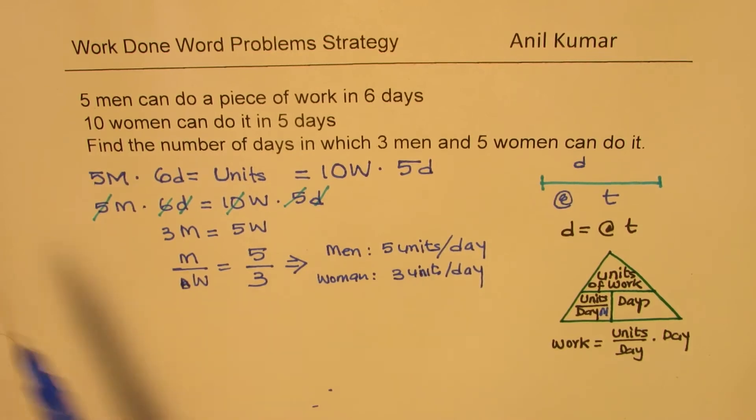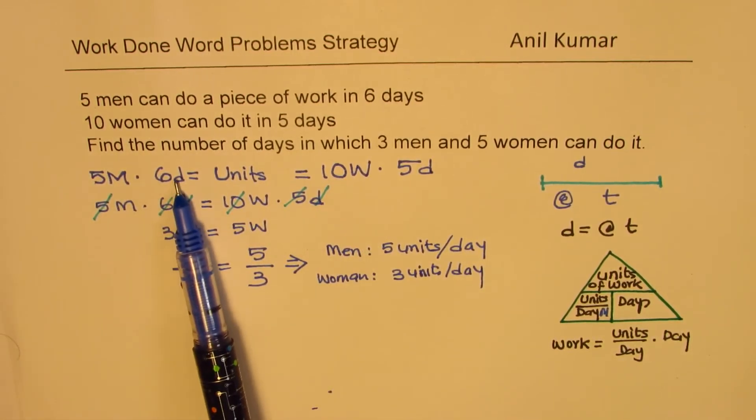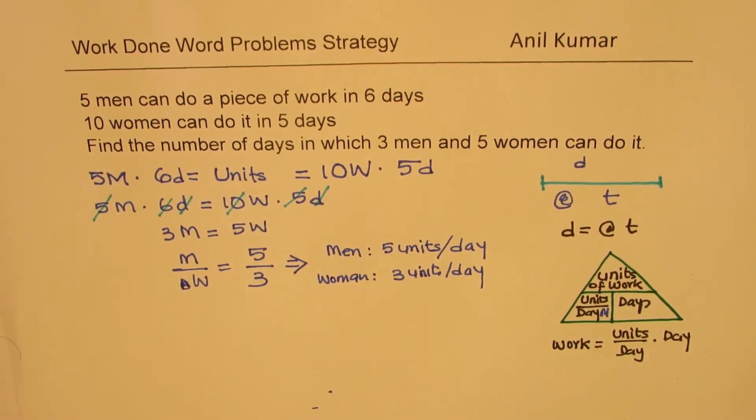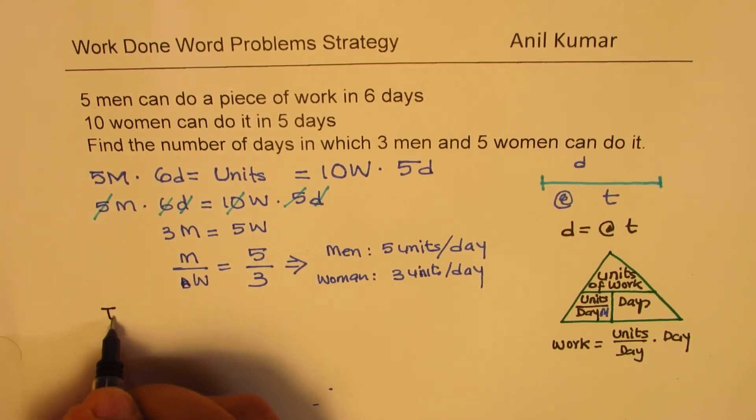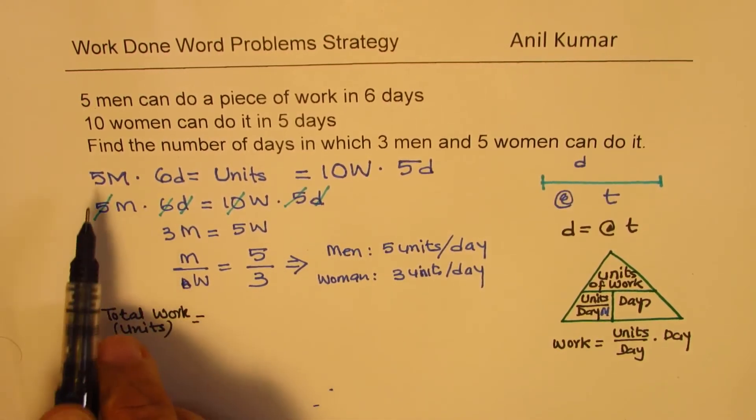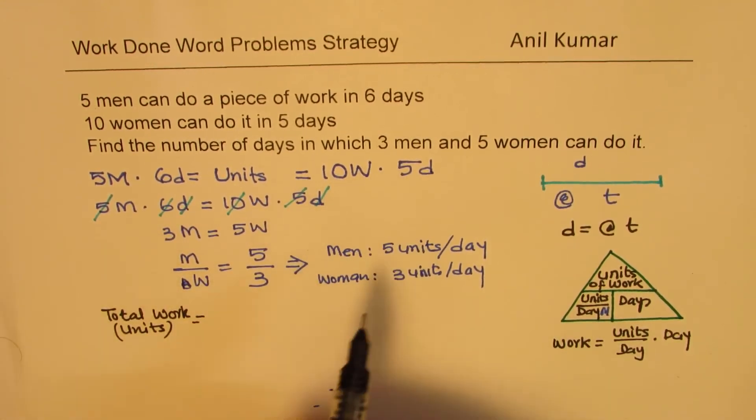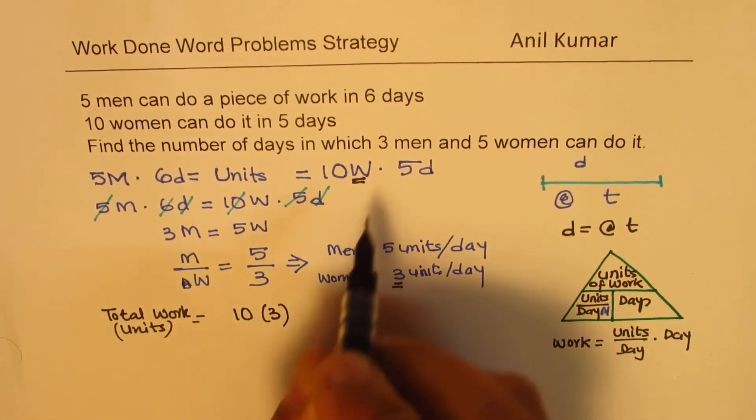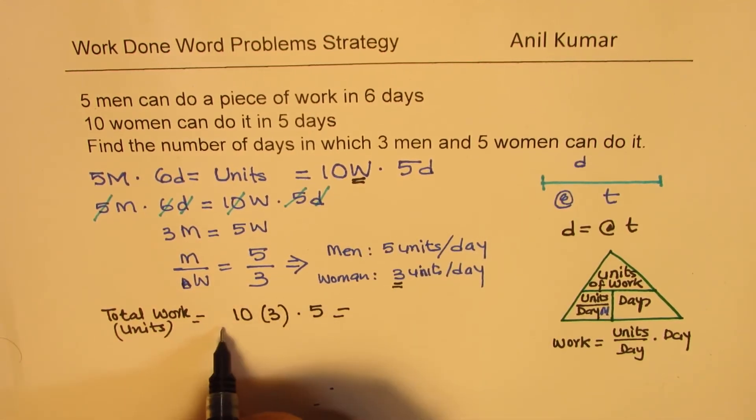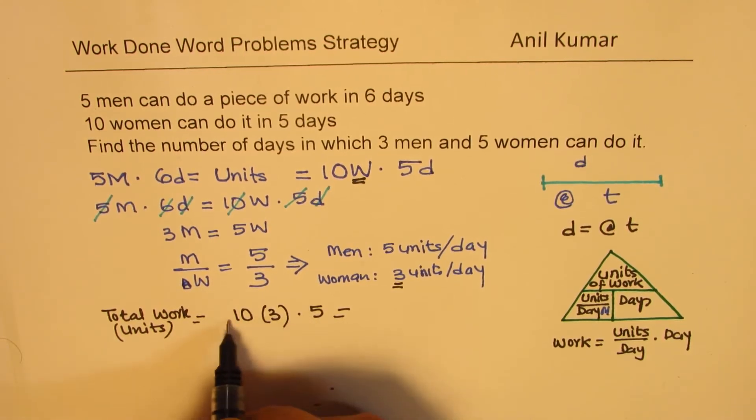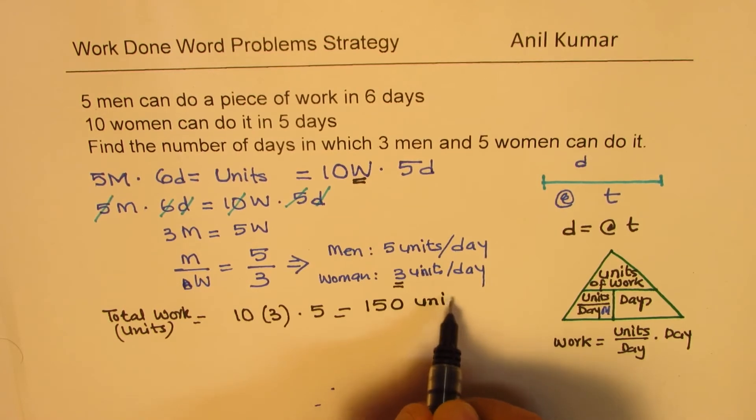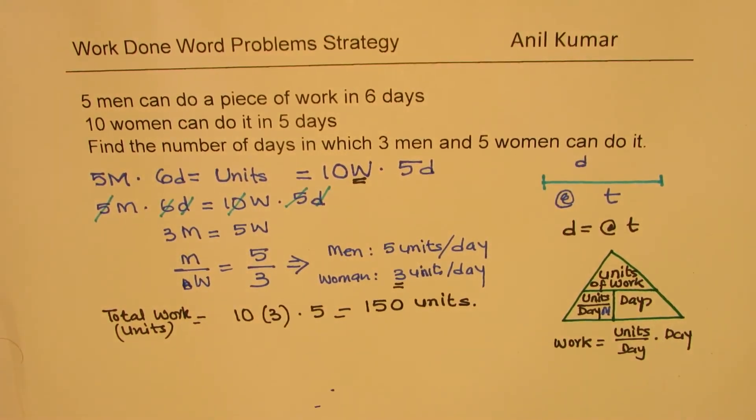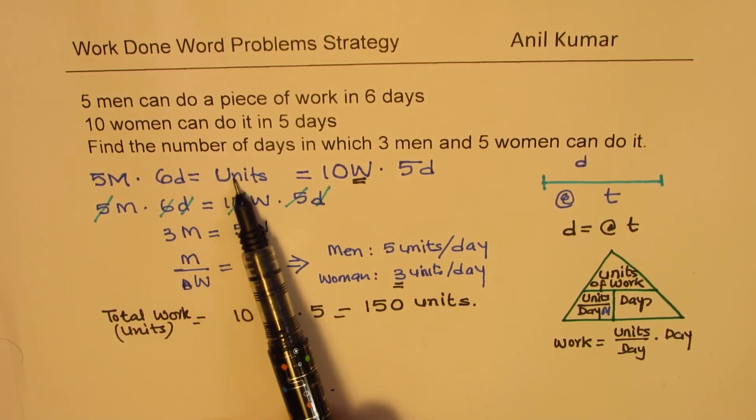Now, once we had the rate, that is the value of M and W, and we know these days, we can find the units of work. From here, we can say total work units is how much? So, we could take either one of these. So, it says 10 women, five days. So, for women, 10 women means three units per day for each woman. So, this value of W will substitute as three. So, we get 10 times three, that is for W, times five. So, the total work is now five times three, 15, 150 units. In this calculation, we could find what was the total units of work which was required to be done.